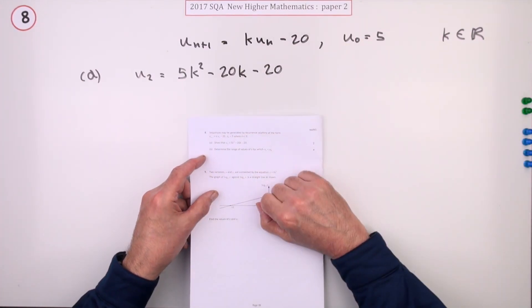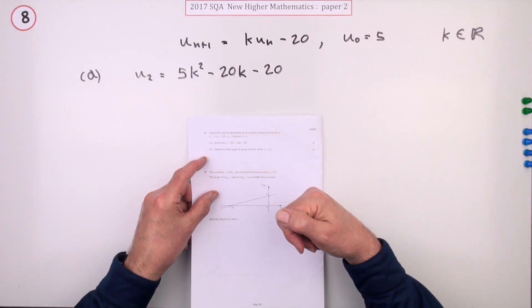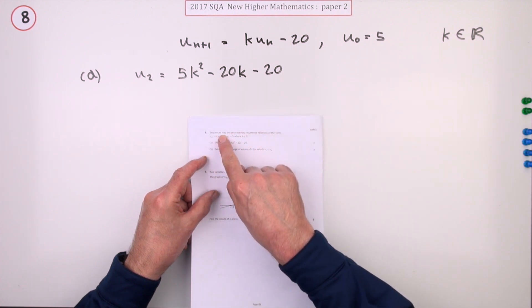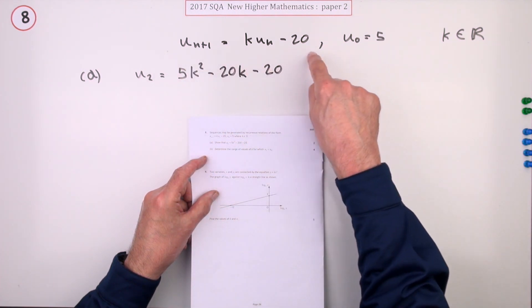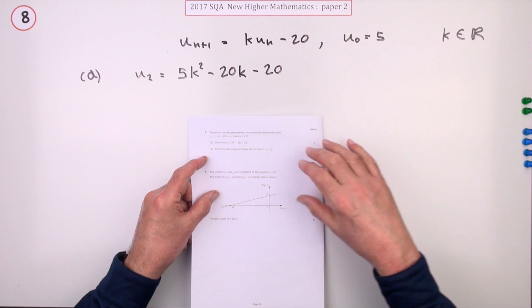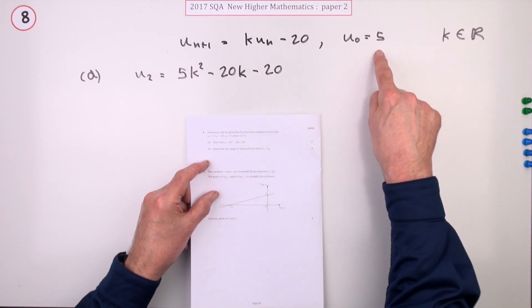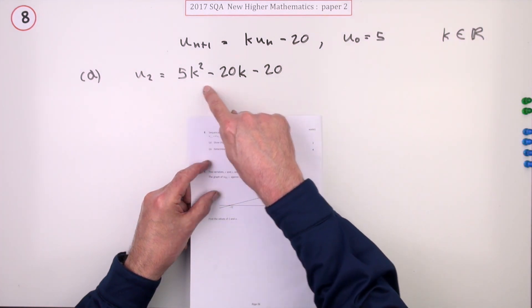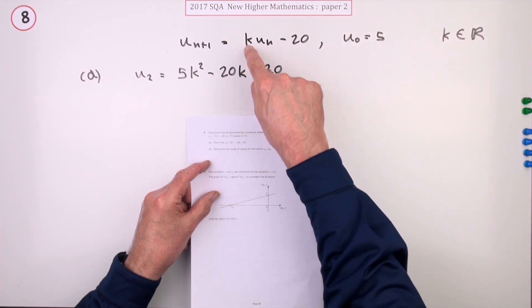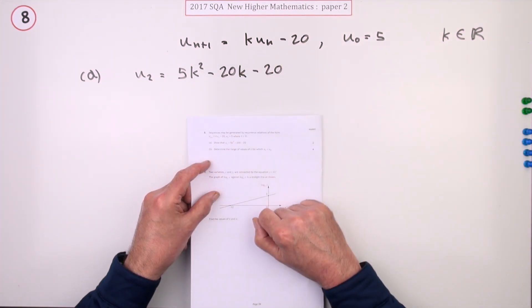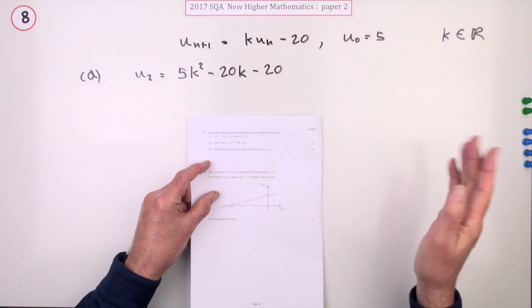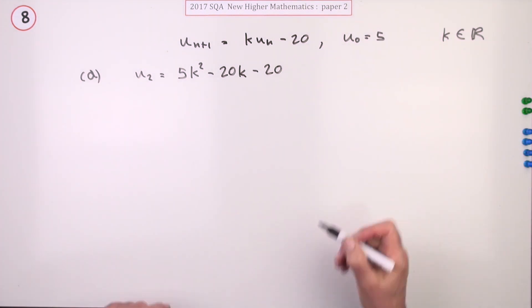Number eight from paper two of the 2017 New Higher Mathematics. A sequence may be generated by using this relation to generate consecutive terms, initial term five. You have to show the second term is given by this expression. Notice there's an unknown k here multiplying, six marks altogether.